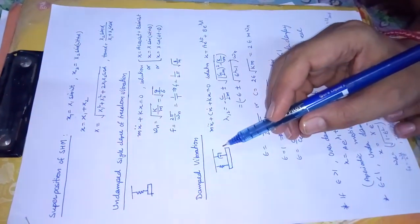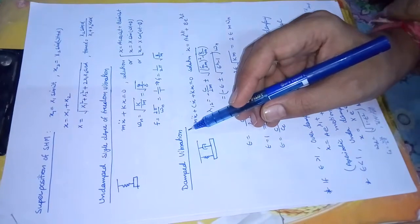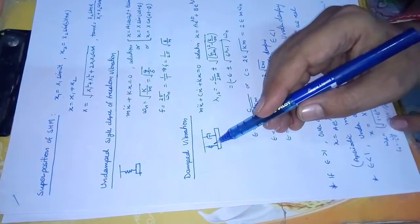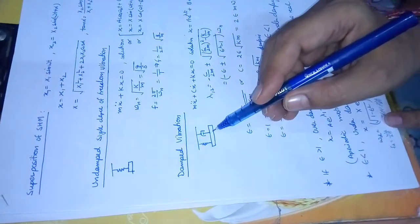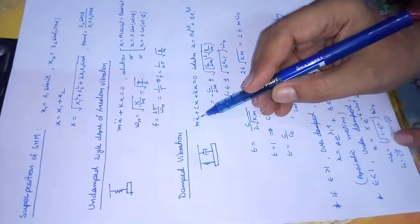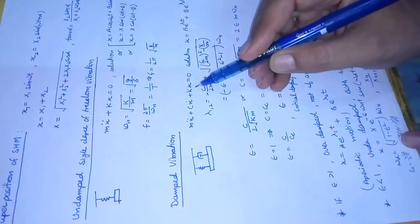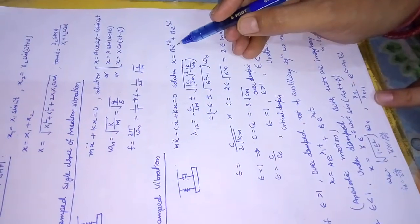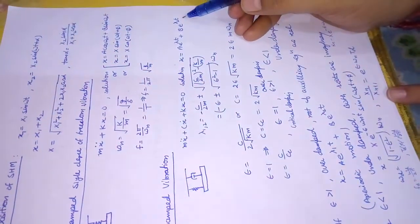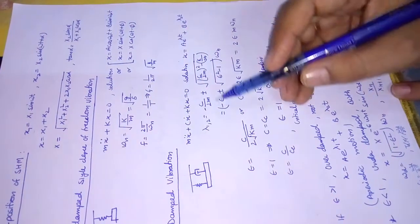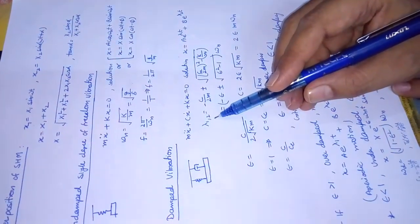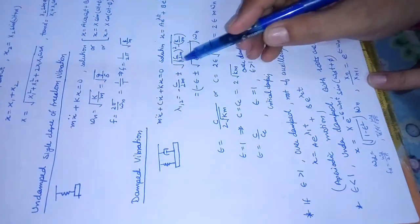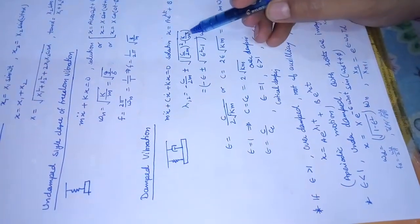We are looking today at damped vibration for a single degree of freedom without any external excitation force. This is a mass with a spring and damper. The equation of motion can be written as mx̄ + cx̄ + kx = 0. The solution is x = ae^(λ₁t) + be^(λ₂t), where λ₁,₂ = -c/2m ± √((c/2m)² - k/m).